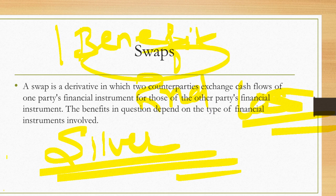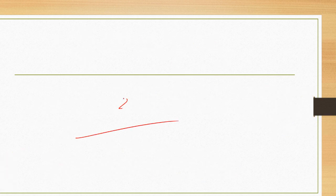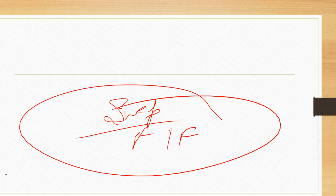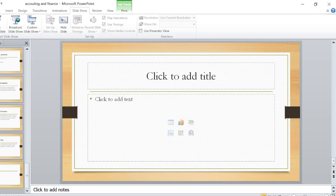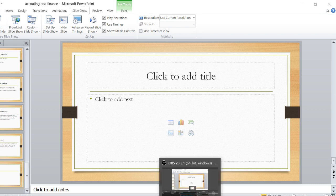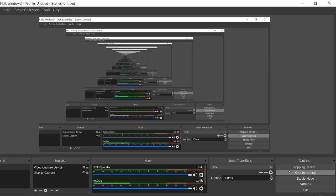In the last lecture video, we had call option, underlying asset, and all these. Today in this lecture video, we have explained what is the swap, what is the forward, what is the future, and what is the difference. If this video is clear, do let me know. In the next lecture video, we will be discussing what is arbitrage and what is financial and multinational marketing. So this is all about today's session. Thank you so much for watching. Take care. Bye-bye.